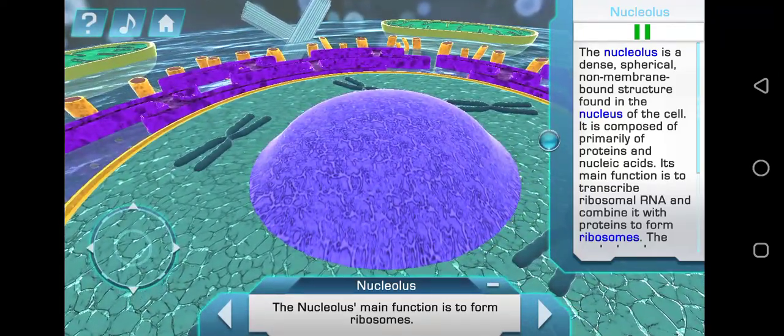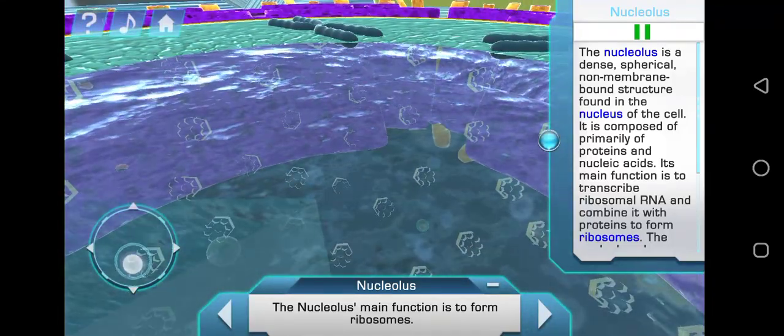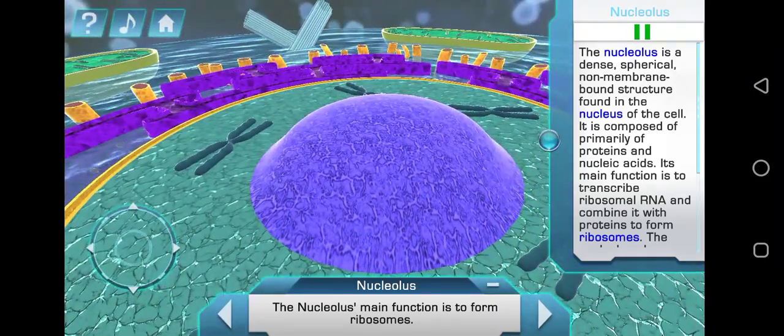The nucleolus also can capture and immobilize proteins, thereby preventing cellular interaction with their binding partners. This helps regulate cellular activity.